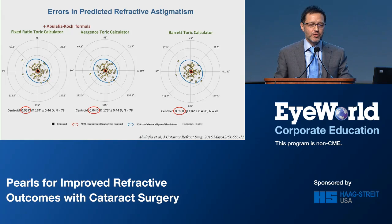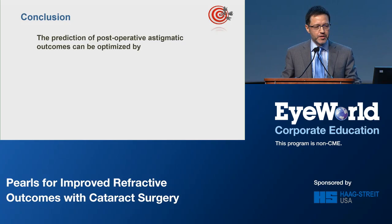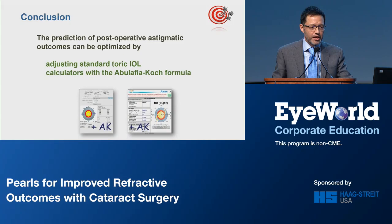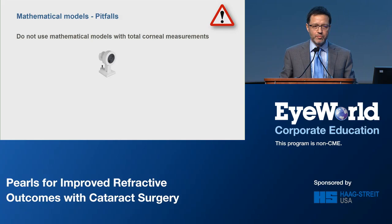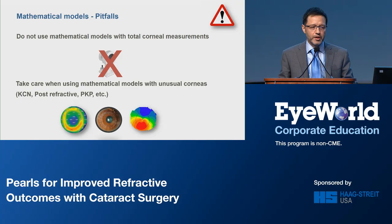The results were similar to those of the Barrett Toric calculator. The conclusion of our study was that the prediction of postoperative astigmatic outcomes can be optimized by adjusting standard Toric calculators with the new formula. When using mathematical models, never use them together with total corneal astigmatism measurements, because then you'll be correcting the same problem twice and you will get it wrong. Also, it is important not to use the mathematical models with unusual corneas like keratoconus or post-refractive corneas, because they were not designed to do so.